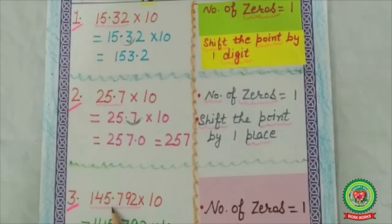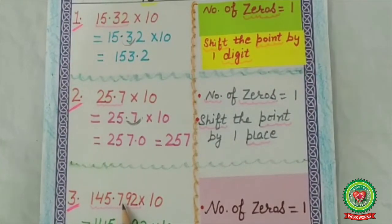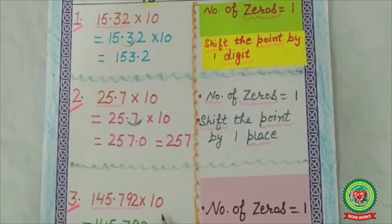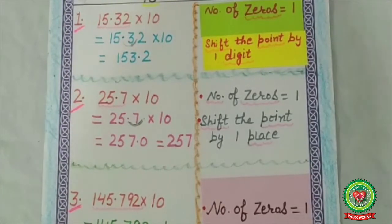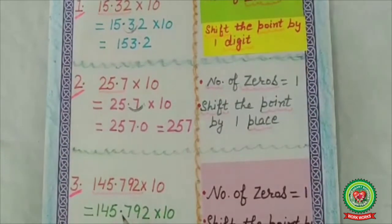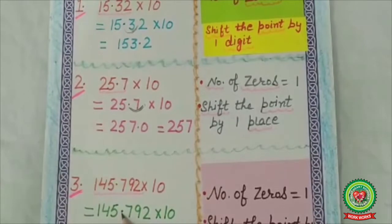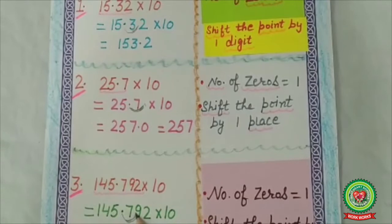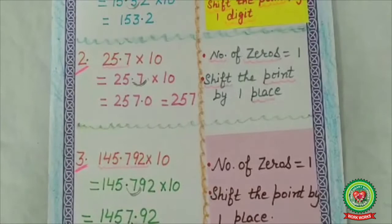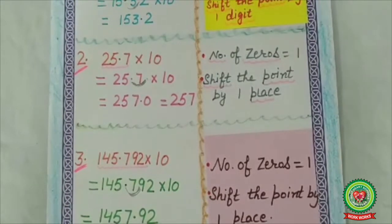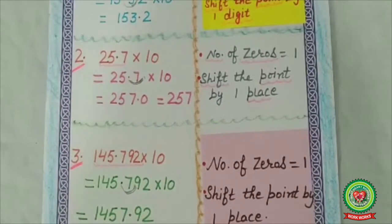Third example: 145.792 multiplied by 10. Number of zeros is 1, so we shift the point by one place. The point is currently between 5 and 7. We shift it one digit to the right, and now the point comes between 7 and 9. So the answer is 1457.92.